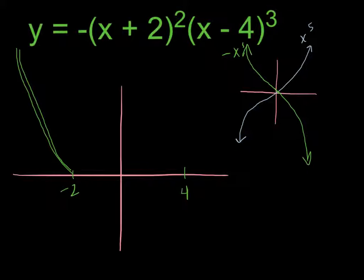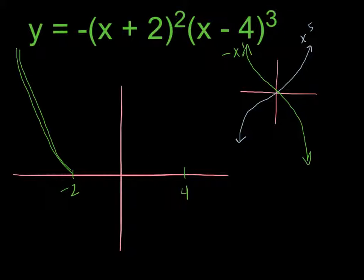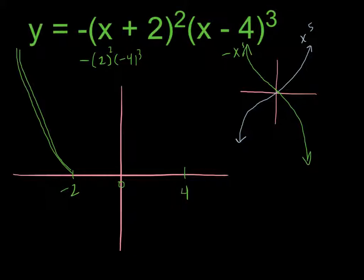We can simply pick a number between negative 2 and 4. The only two roots are negative 2 and 4, so if the function is positive at some point in between, it must stay positive throughout that interval. Let's use 0: plugging in 0 gives negative 2 squared times negative 4 cubed. A positive squared is positive, and a negative cubed is negative, so we have negative times positive times negative — a positive value. So the function must bounce back up off the x-axis at negative 2.